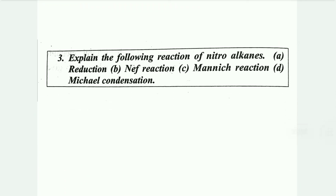Explain the following reactions of nitroalkanes: (a) reduction, (b) Nef reaction, (c) Mannich reaction, and (d) Michael condensation. For each sub-part write 2 marks worth — reduction 2 marks, Nef reaction 2 marks, Mannich reaction 2 marks, Michael condensation 2 marks. So: 2 gives 5 star, 3 gives 7.5, 4 gives 10 star.